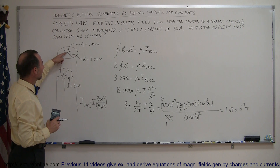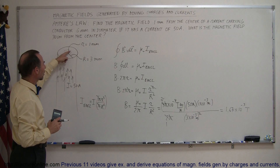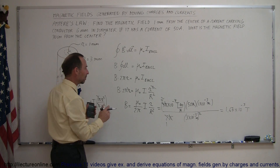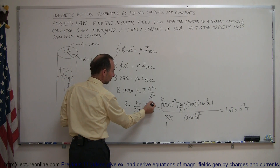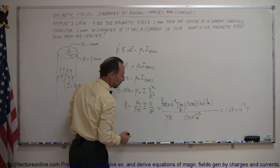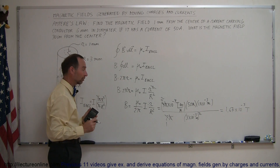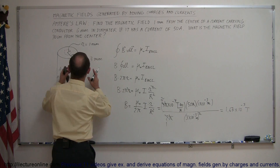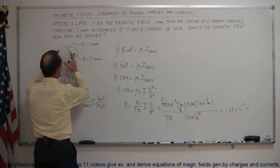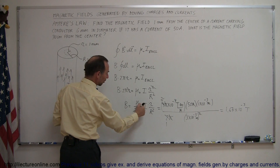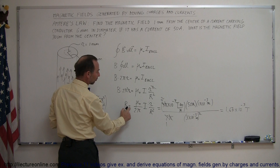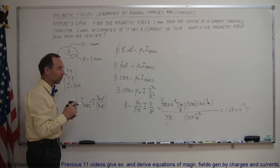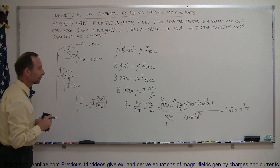Does that mean the field will get stronger as you go further and further out? The answer is yes. The B field is a function of the radius of where you are inside the conductor. As the radius gets bigger, the B field gets bigger — it's a linear relationship. The B field is proportional to the radius to the first power when you're inside the conductor.